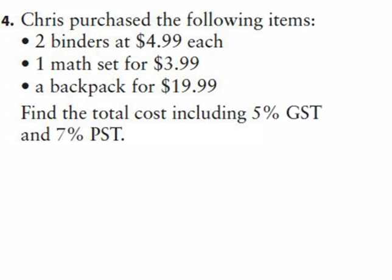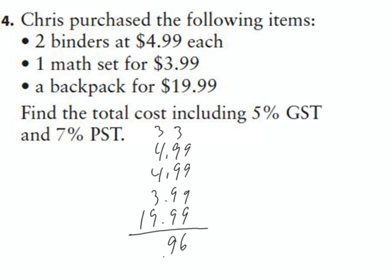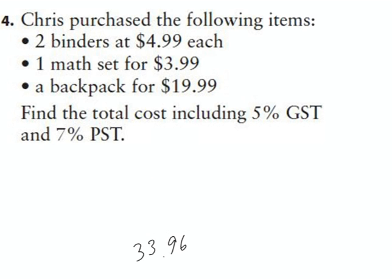So the first thing I have to do is figure out how much he actually paid. So I'm going to add them up. So $4.99 and $4.99 and $3.99 and $19.99. Some of that is, that's $36, carry 3, $36, $39, carry 3. That's $8, $9, $10, $11, $20, $23, $33, $96. The cost of everything is $33.96, not including the GST and PST.